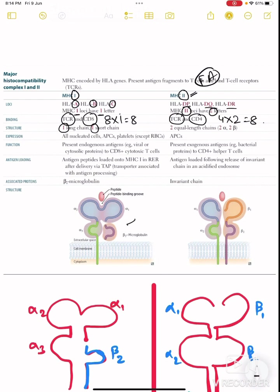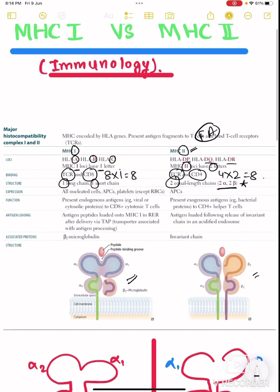It has one long chain and one short chain. You have seen it over here. And two equal length chains, 2 alpha and 2 beta. You have seen it over here. Now expression.